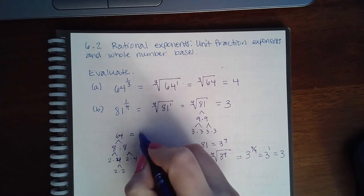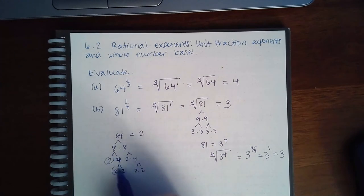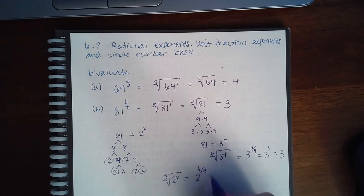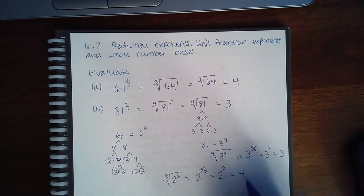So 64 is equal to 2 to the 1, 2, 3, 4, 5, 6 power. And then the cube root of 2 to the 6th power can actually be written as 2 to the power 6 over 3, which is 2 to the 2nd power, which we know is 4.